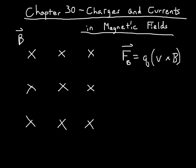Chapter 30 is all about the interplay between charges and currents and magnetic fields. We're going to start with an example of what happens when you have a charge moving in a magnetic field.